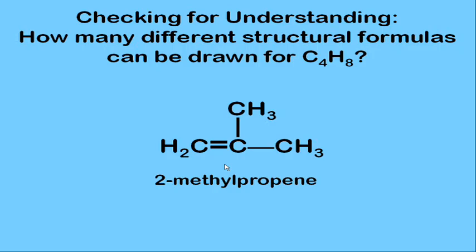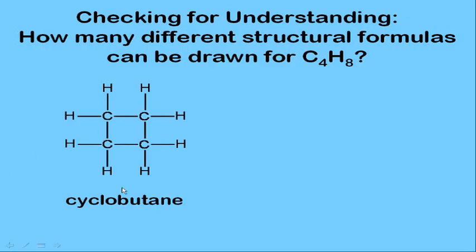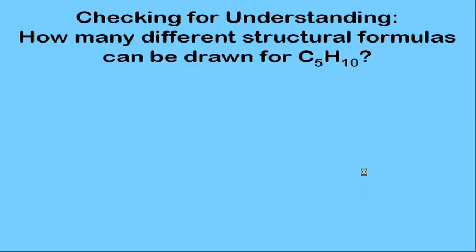Don't forget cycloalkanes. For C₄H₈, the most obvious is cyclobutane. But you could also have a three-carbon ring with a methyl group on the side — that molecule is called methylcyclopropane. Those are all the examples you can draw for C₄H₈.